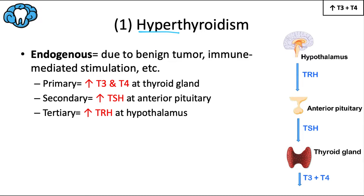The first thyroid disorder is hyperthyroidism, or thyrotoxicosis, which is an excess of thyroid hormone in the bloodstream. This picture shows the hypothalamic-pituitary-thyroid axis, similar to the one from the adrenal insufficiency video. Hyperthyroidism means the thyroid gland is overactive and producing too much thyroid hormone, which can be due to an endogenous source such as a benign tumor overproducing hormone, or autoimmune stimulation like Graves' disease.